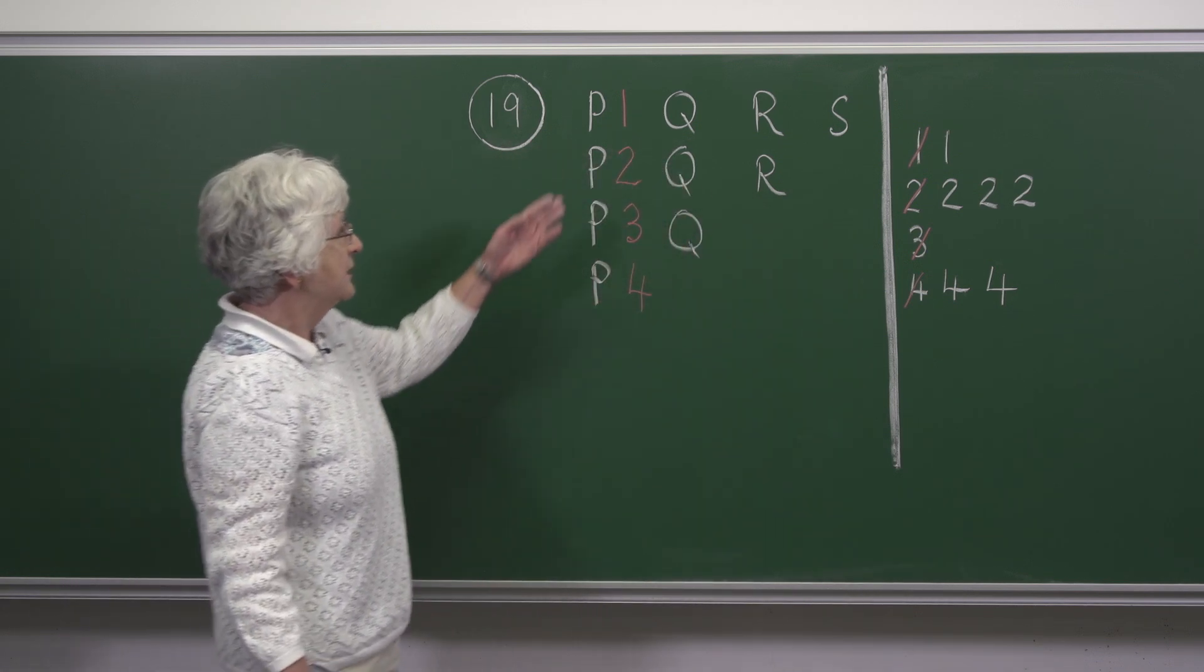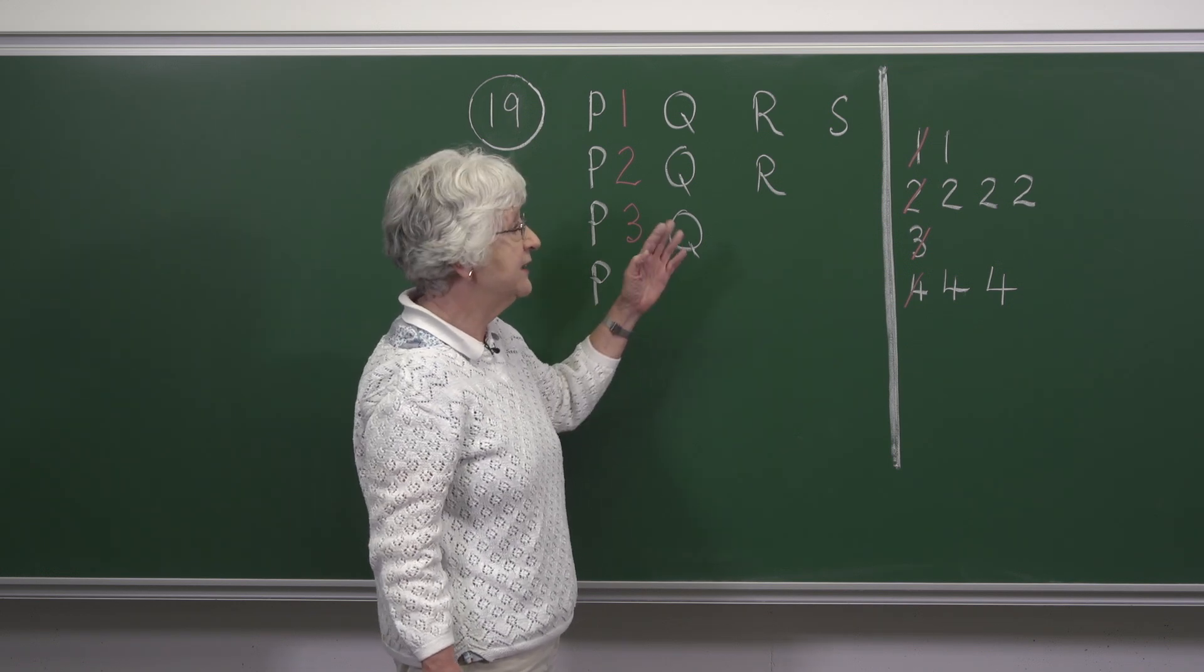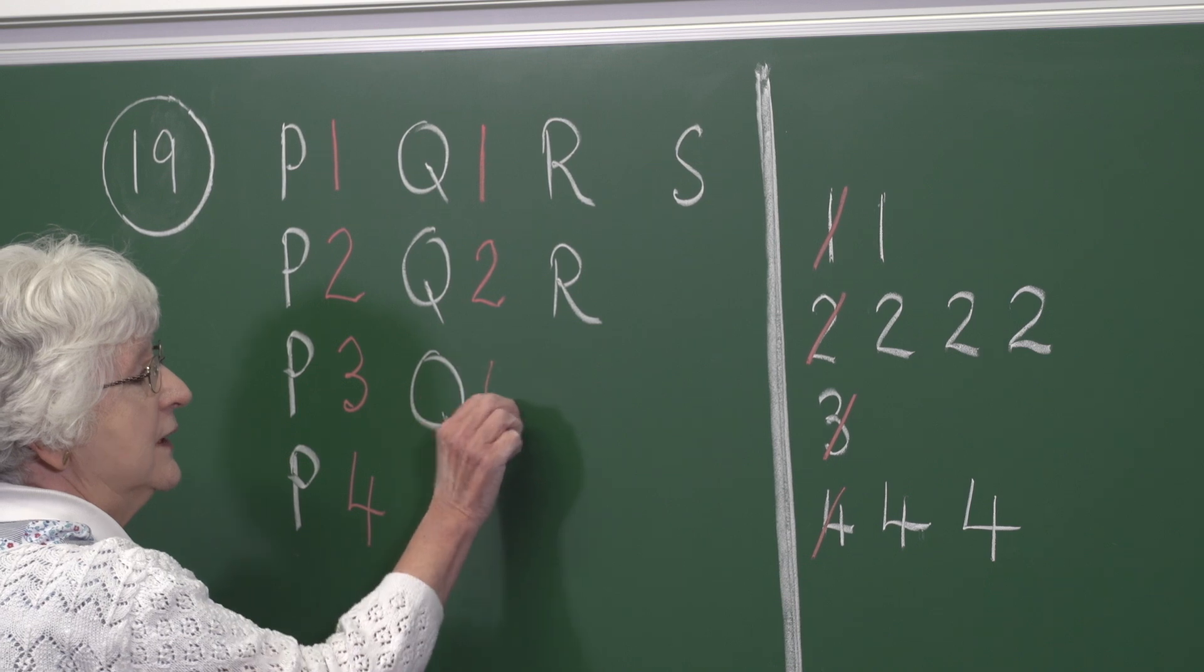In the same way, Q has to be paired with three different numbers, and the only three different numbers that are left are 1, 2 and 4.